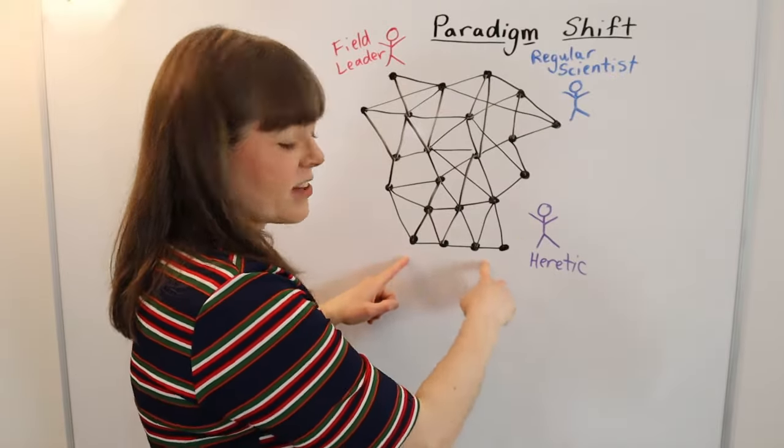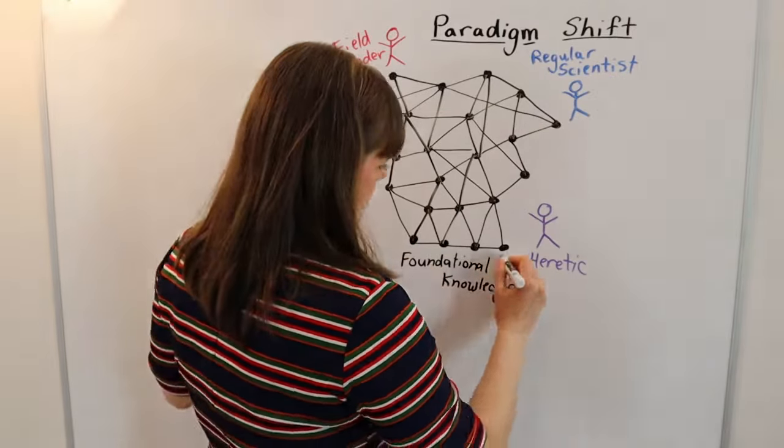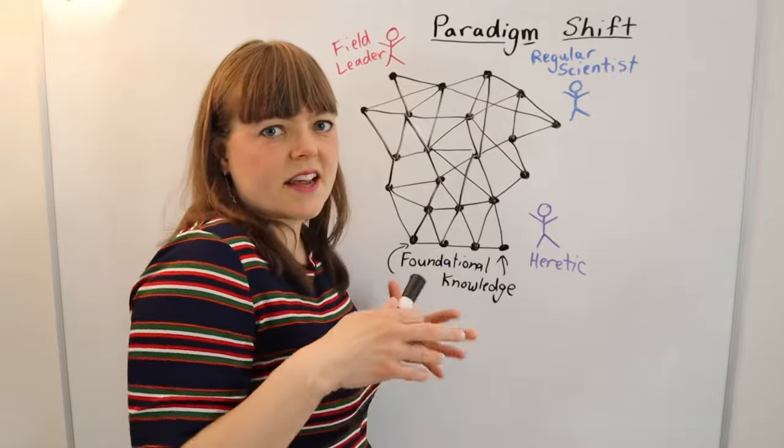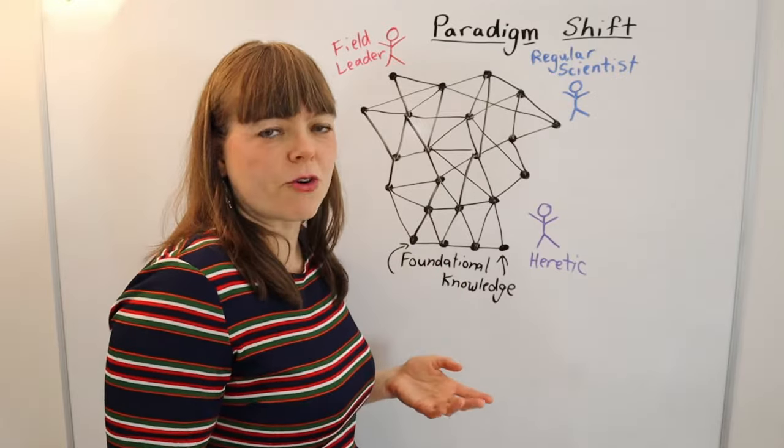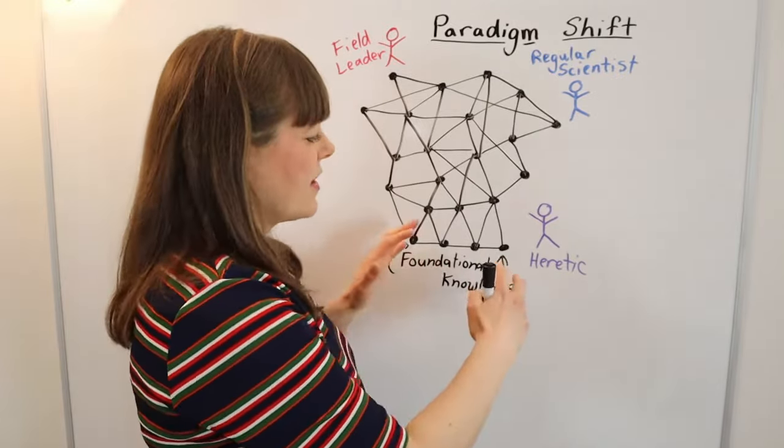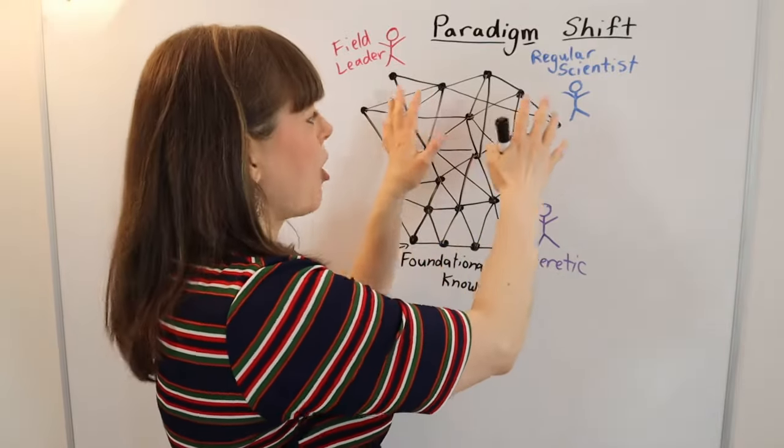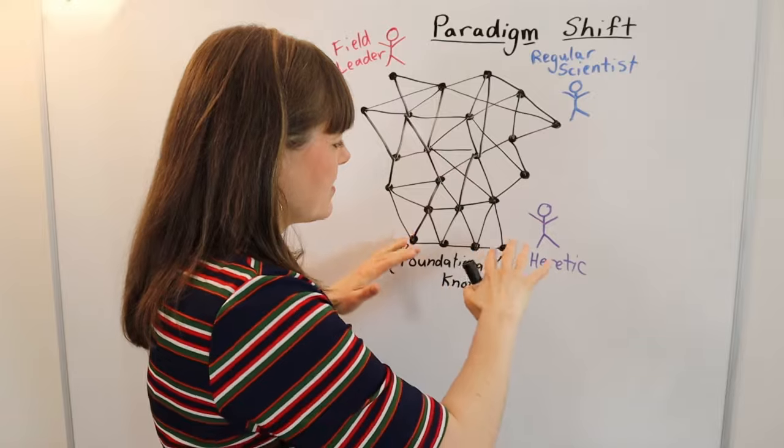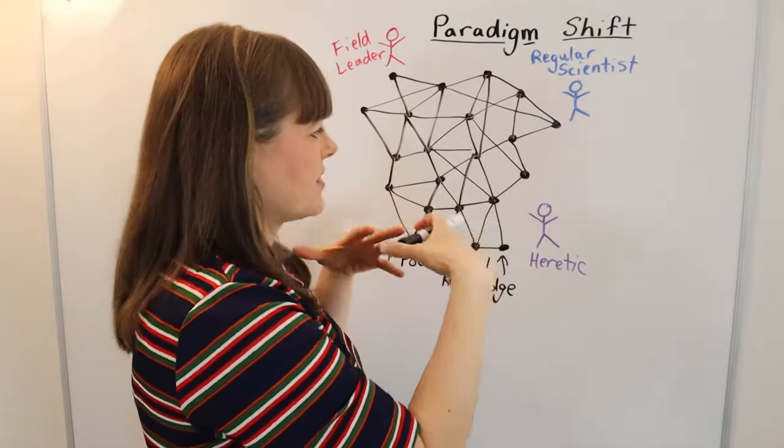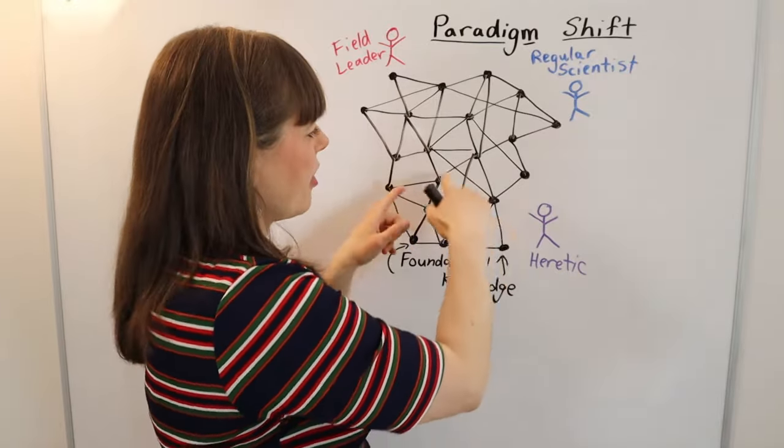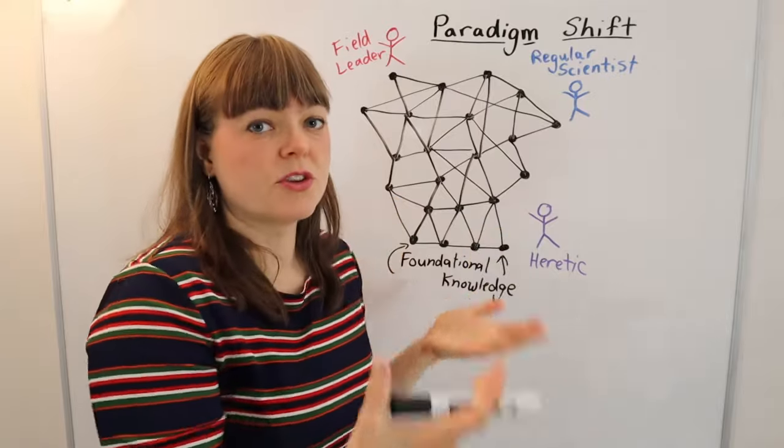We've got foundational knowledge down here. You can think of this as the stuff that's in any textbook for a given field. It's sort of the set of information that everybody's scientific research is building upon. And then as the field builds out, as the field develops new knowledge, they sort of build on that foundation and come up with new discoveries.